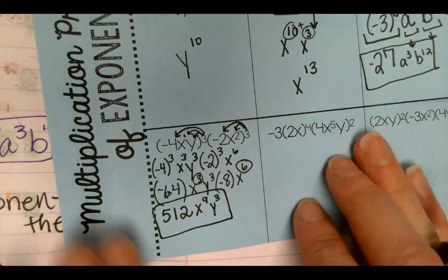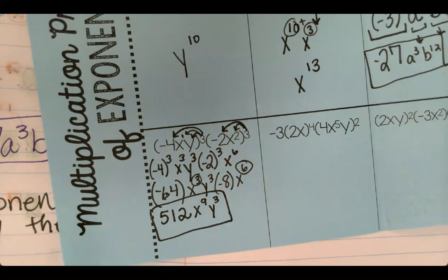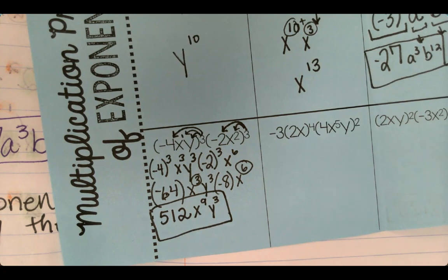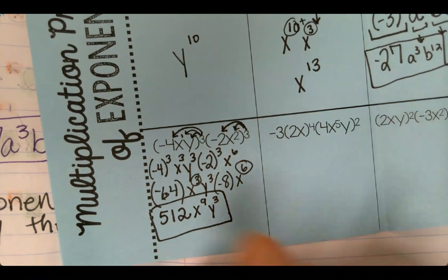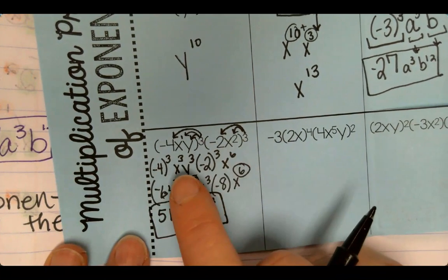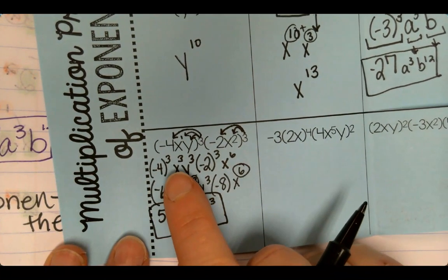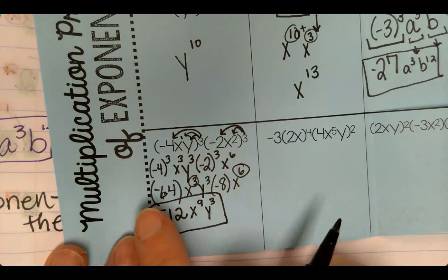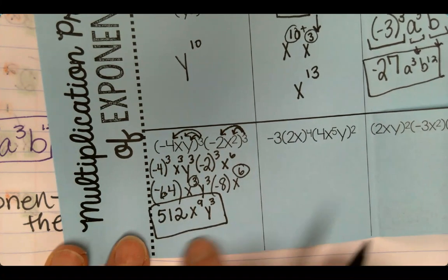That took some time, didn't it? So the important thing about these exponents is keeping yourself organized. Writing things down. Once you get better at it, then you won't have to write as much. But right now, I want you to write it. Just like I did. You write your exponents with your numbers. Write your variables with your exponents. Rewrite. And then rewrite again.